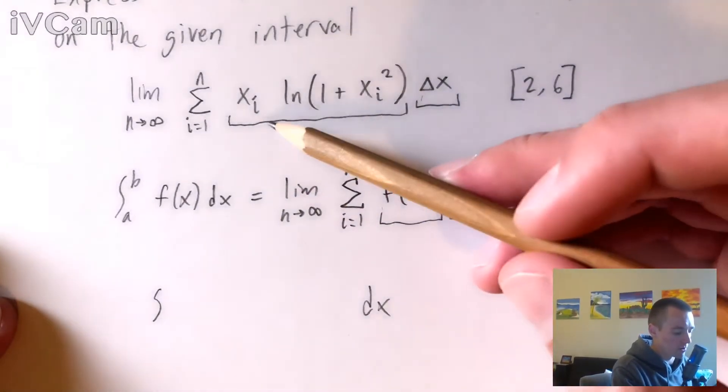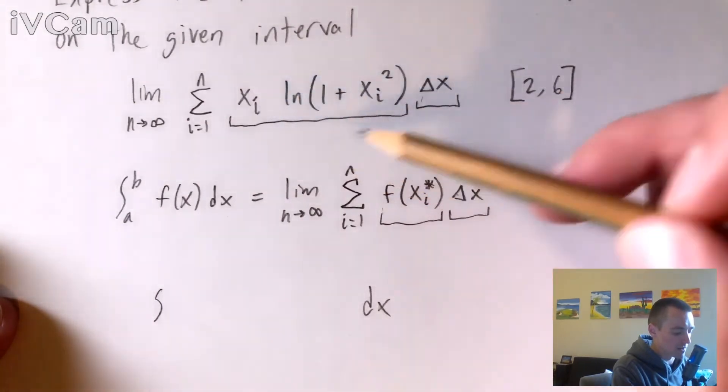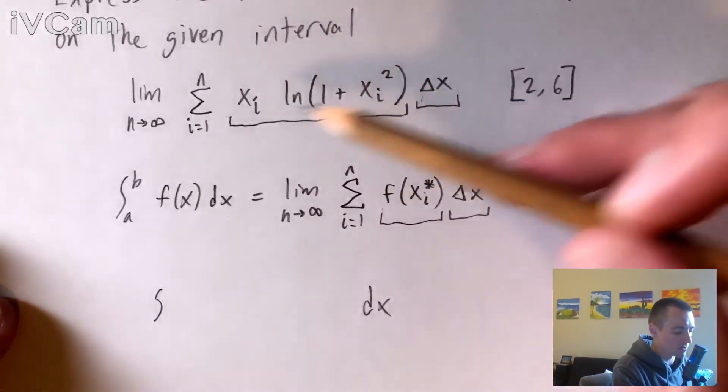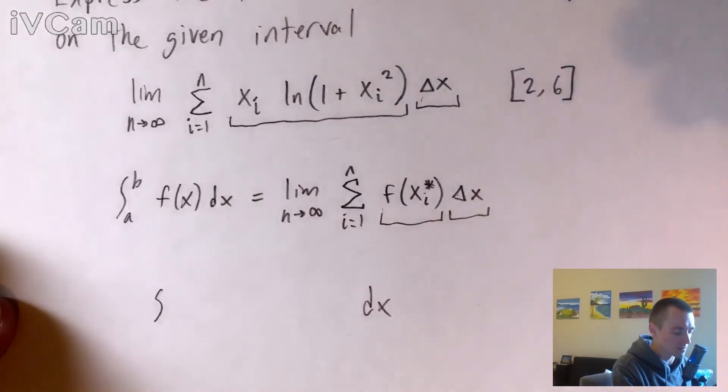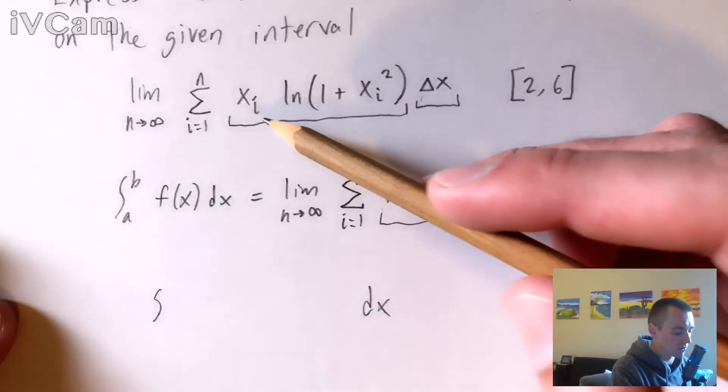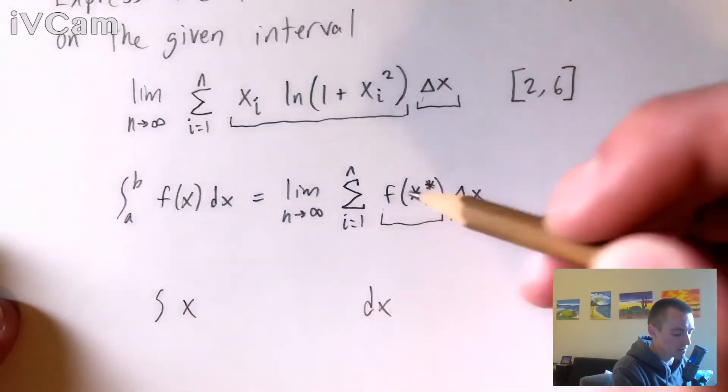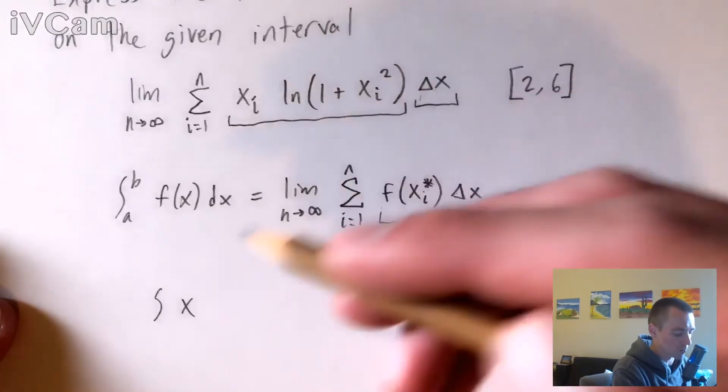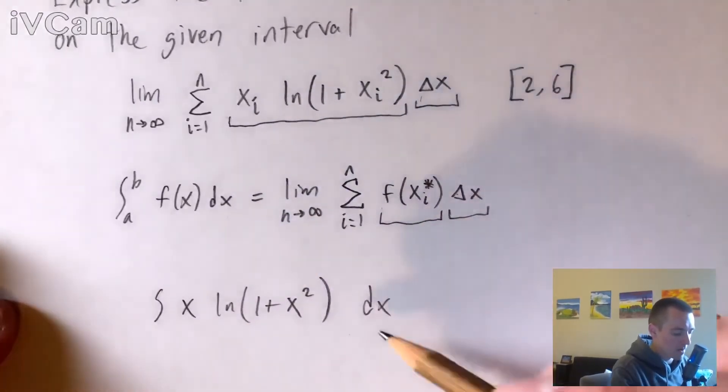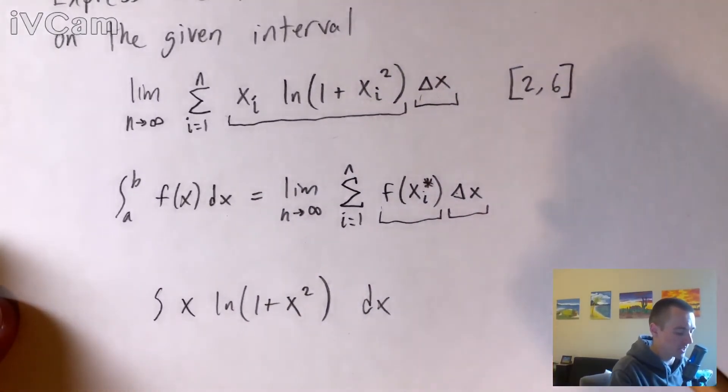So what we want to do is look at the rest of this, and essentially our xi's are just going to transition to be x's. So this function is just going to become x times ln of 1 plus x squared. And then our dx comes from that delta x.